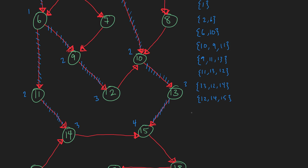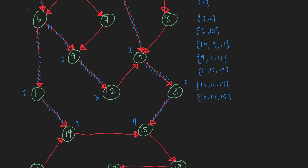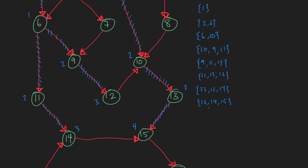Now 13 is up next. We dequeue 13 and enqueue 15, which is now at a distance of 4. The queue becomes: 12, 14, and 15. When we dequeue 12, node 10 has already been discovered, so we don't enqueue anything. The queue is now just 14 and 15.